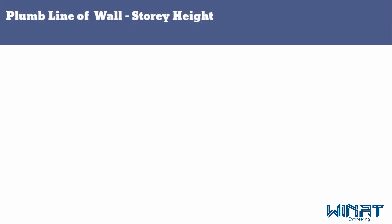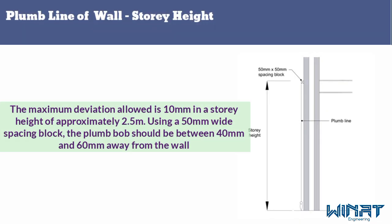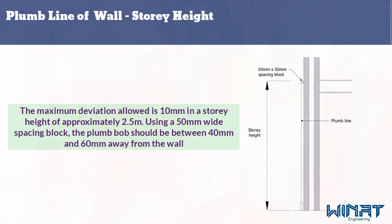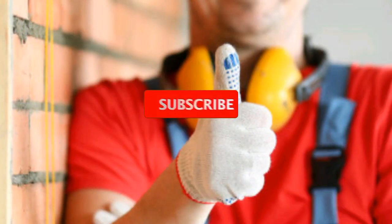The next tolerance is plumb line of wall for story height. The maximum deviation allowed is 10 millimeters in a story height of approximately 2.5 meters. Using a 50-millimeter wide spacing block, the plumb bob should be between 40 millimeters and 60 millimeters away from the wall.